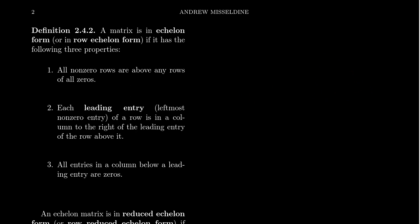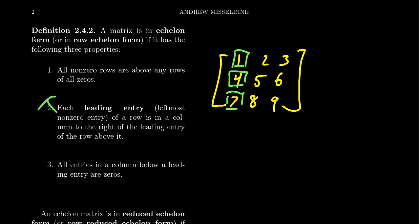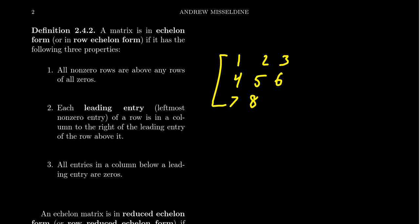Let's look at non-examples. The matrix [1, 2, 3; 4, 5, 6; 7, 8, 9] satisfies condition one, but the leading entries of all three rows are each in the first position — the pivots don't move rightward as you move downward. This violates condition two. Furthermore, if condition two fails, condition three fails automatically, since there will be non-zero entries below a leading entry. So these three conditions together define a matrix in echelon form.